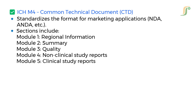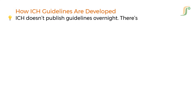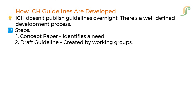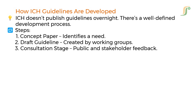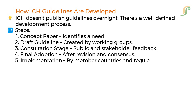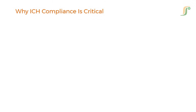ICH guidelines go through a well-defined five-step development process: Step 1 — a concept paper identifies a need; Step 2 — a draft guideline is created by working groups; Step 3 — consultation stage with public and stakeholder feedback; Step 4 — final adoption after revision and consensus; Step 5 — implementation by member countries and regulators. Tip: Step 4 means final; Step 5 means implemented.